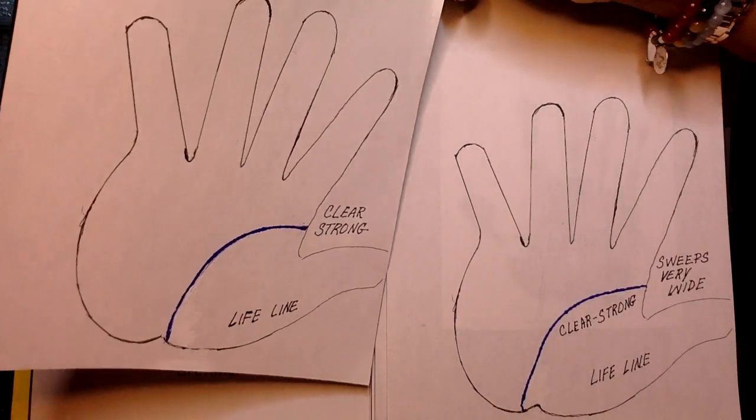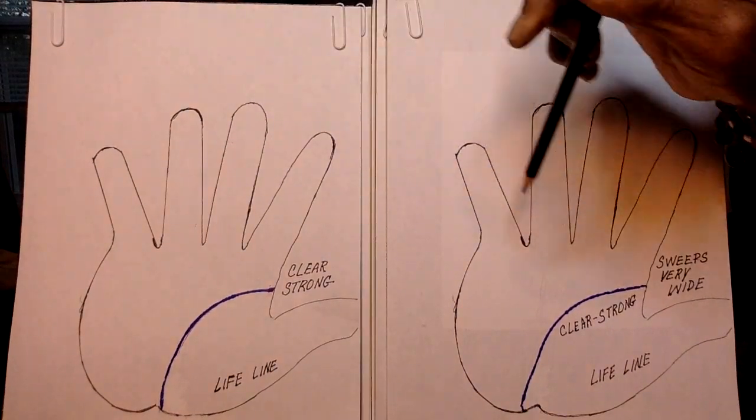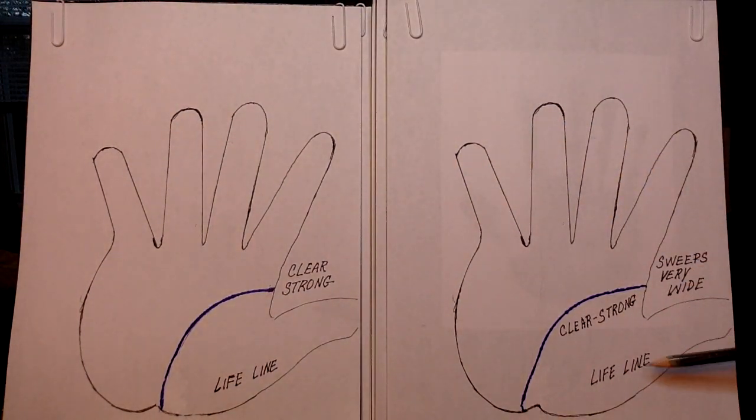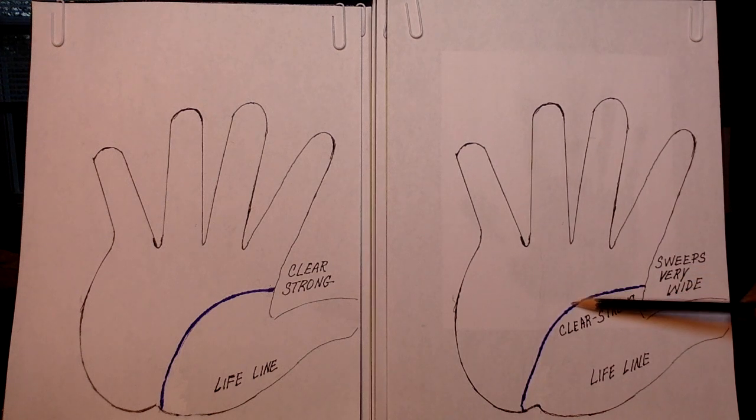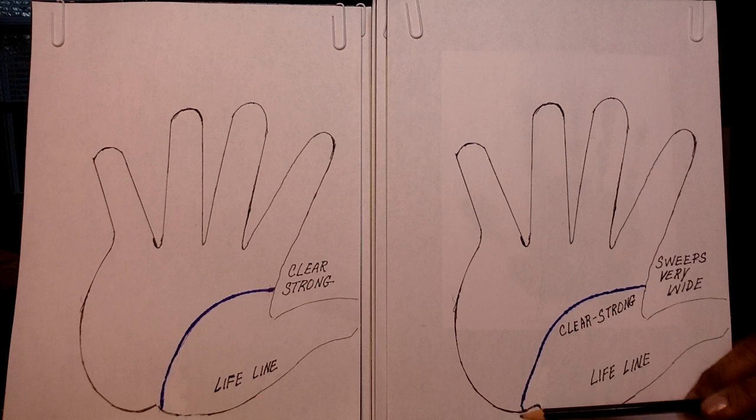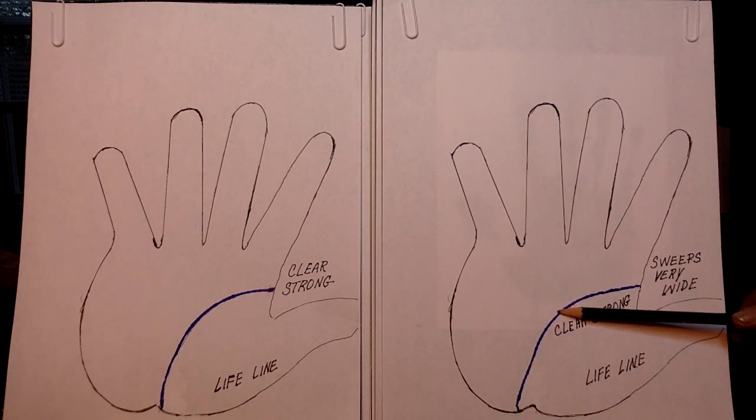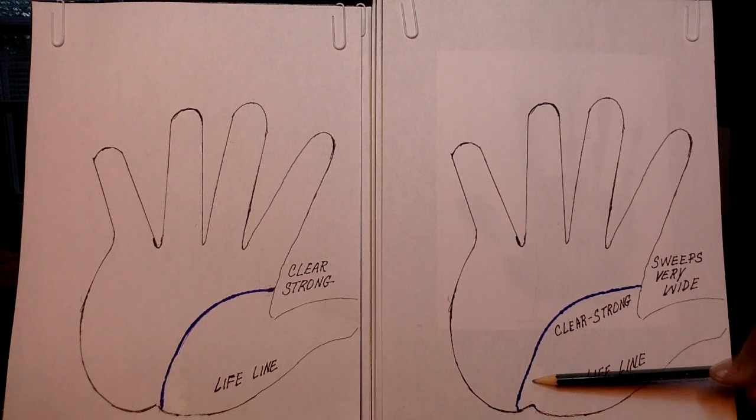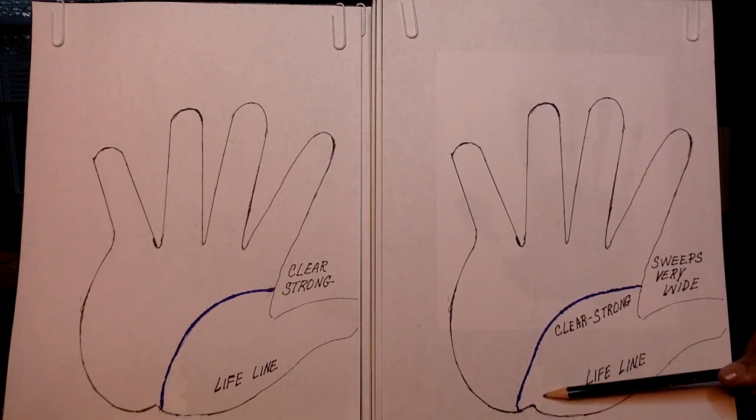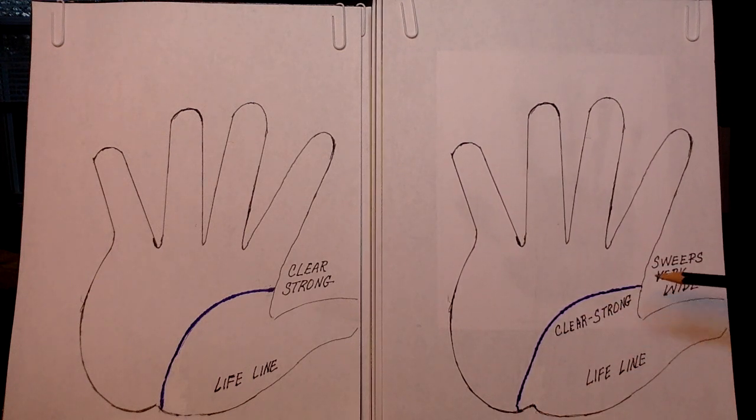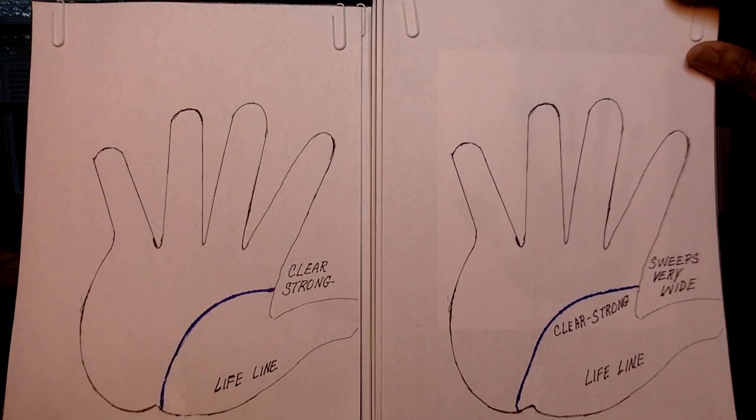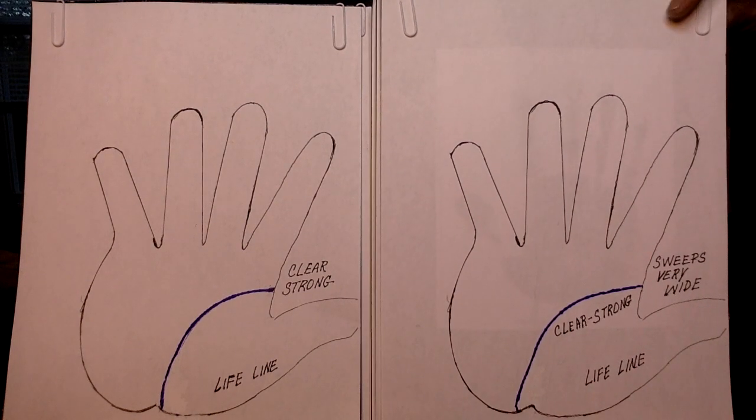Now, just as a comparison, this is a good, clear, strong line, but it sweeps widely. It doesn't end right in here. It just sweeps beyond that gap area. So that's what makes it wide and very wide. And sweeps.